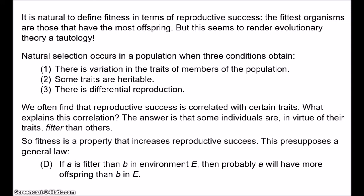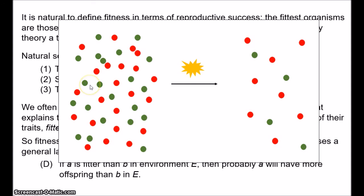Furthermore, we need to allow that reproductive success can be produced by processes other than selection. In contemporary evolutionary theory, an important process is genetic drift — a change in frequencies of alleles due to sampling error. Suppose you have a population of butterflies, 50% with red wings and 50% with green wings. Then an environmental disaster happens, most butterflies are killed, and just by chance most of the survivors have red wings. We wouldn't want to say that red wings are fitter than green wings — it's not that red wings confer some advantage in surviving volcanic eruptions. The green-winged butterflies simply fell victim to bad luck. But the red-winged butterflies will be more reproductively successful.